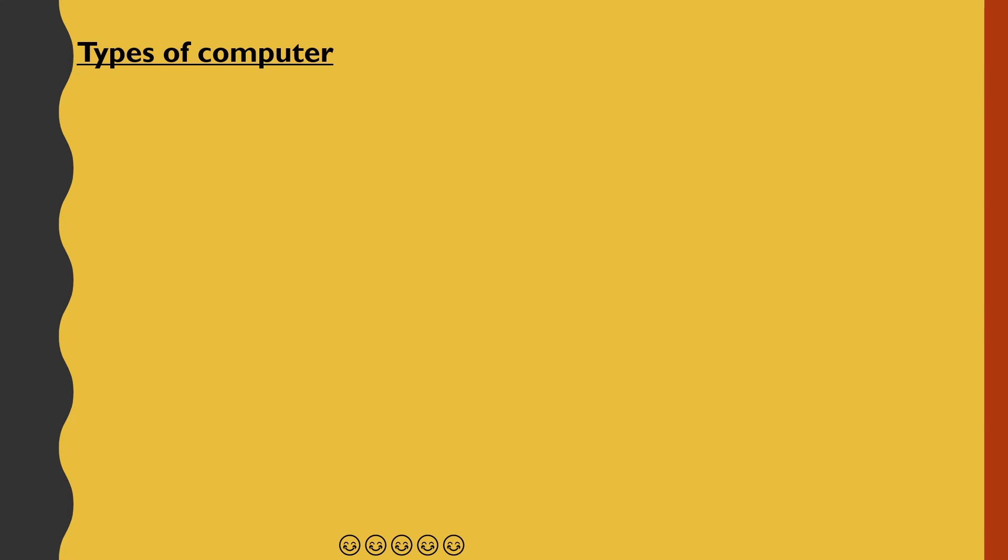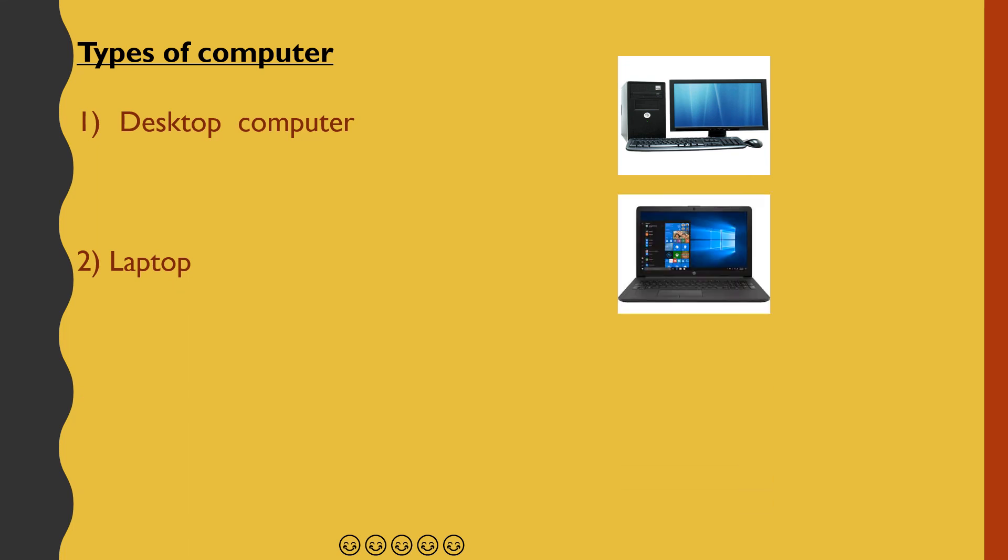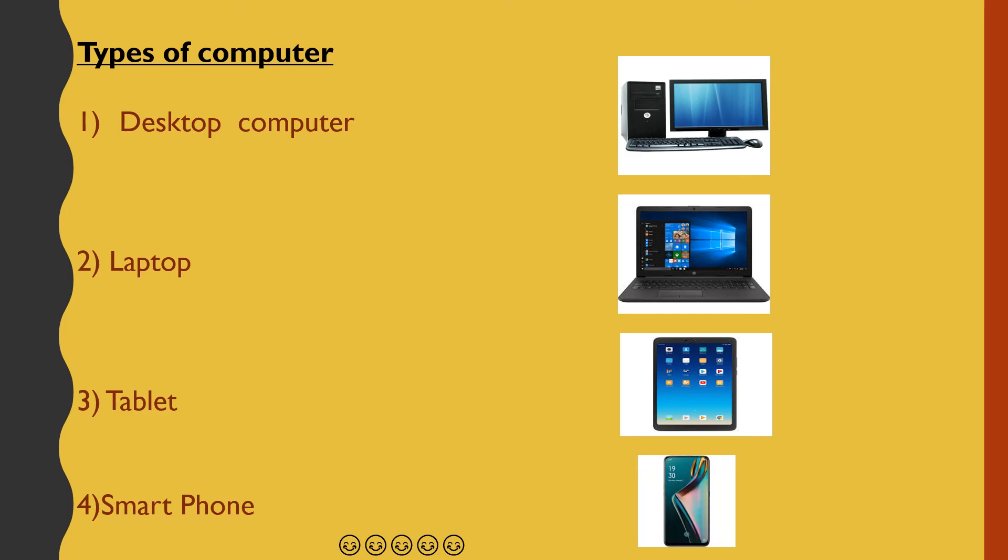So let's learn types of computer. First is desktop computer, this is desktop computer. Laptop, this is laptop. Tablet, this is tablet. Smartphone, and this is smartphone.